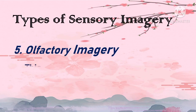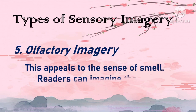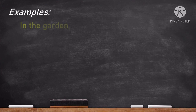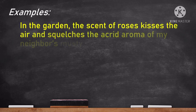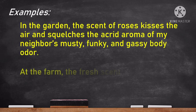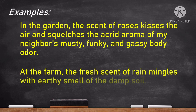The fifth type is olfactory imagery. This appeals to the sense of smell — readers can imagine the scents present in scenes or events. Examples: 'In the garden, the scent of roses kisses the air and squelches the acrid aroma of my neighbor's musty, funky, and gassy body odor.' 'At the farm, the fresh scent of rain mingles with the earthy smell of damp soil.'